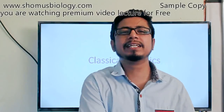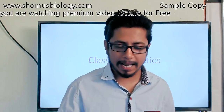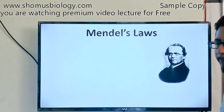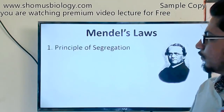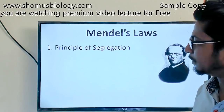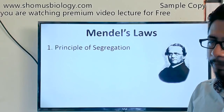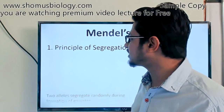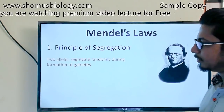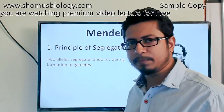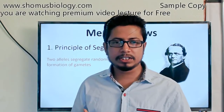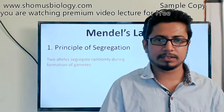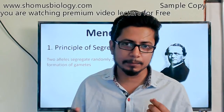What Mendel observed through a series of experiments conducted on pea plants led him to conclude two important ideas, which we call the Laws of Mendel: the Law of Segregation, or Principle of Segregation, and the Principle of Independent Assortment. The first — the Principle of Segregation — states that two alleles segregate randomly during the formation of gametes. When we talk about transferring a gene from parent to offspring, the mode involves the somatic cell with 2n chromosomes.